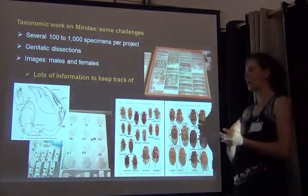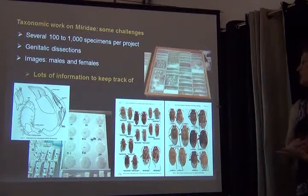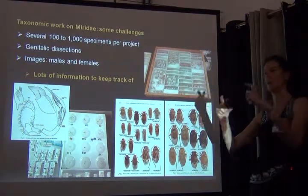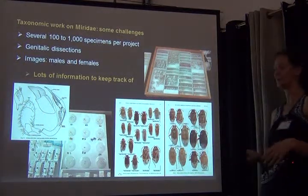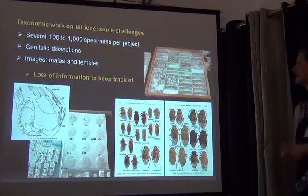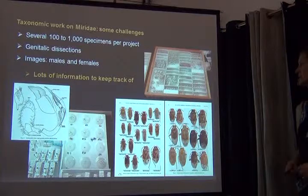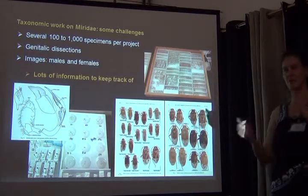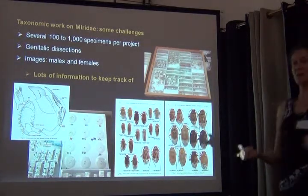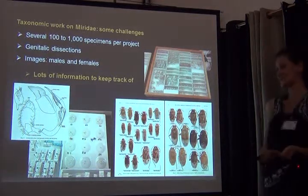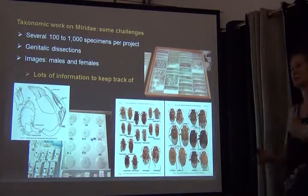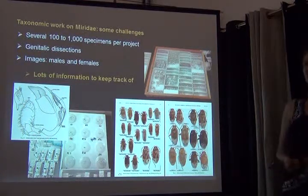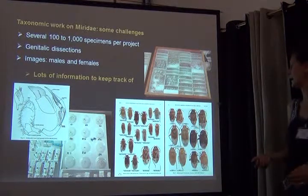The challenges at that point were that we knew we'd be dealing with hundreds to several thousand specimens for each of the individual revisionary projects. There were about ten to twelve of us doing the taxonomic work, and we knew we all had to cope with a lot of specimens. We also have genitalic dissections that we have to keep connected with the specimens, and images of males and females — which means lots of information to keep track of. So in 2003, there was no way other than using a specimen database to make sure we weren't losing any information.